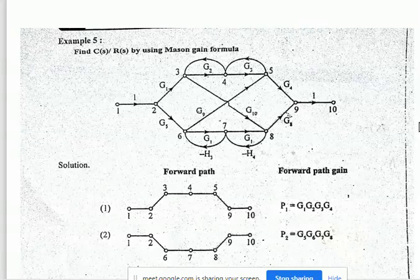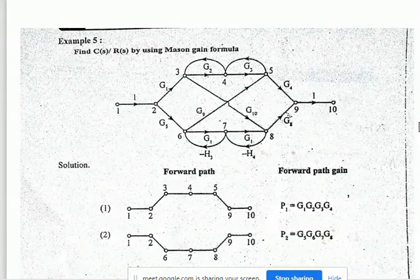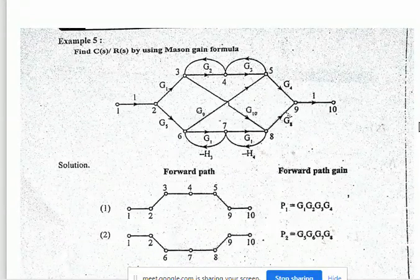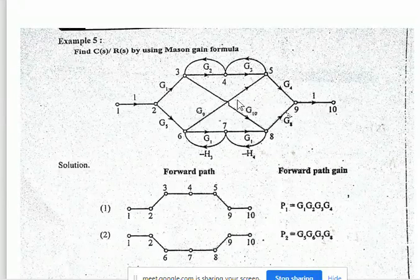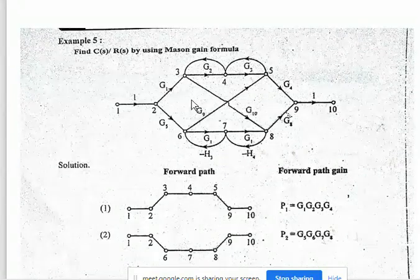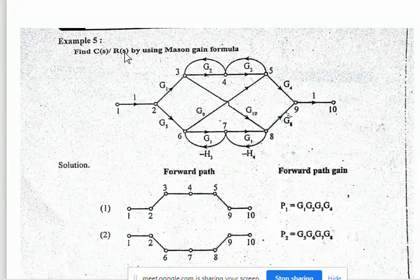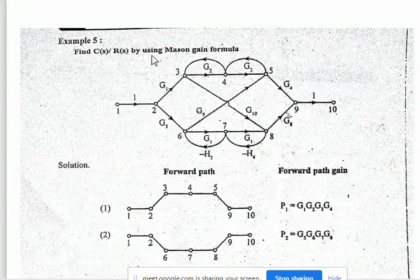Today we are going to solve problems on Mason's gain formula. We have been given one network here with a signal flow graph. Find C by R using Mason's gain formula.